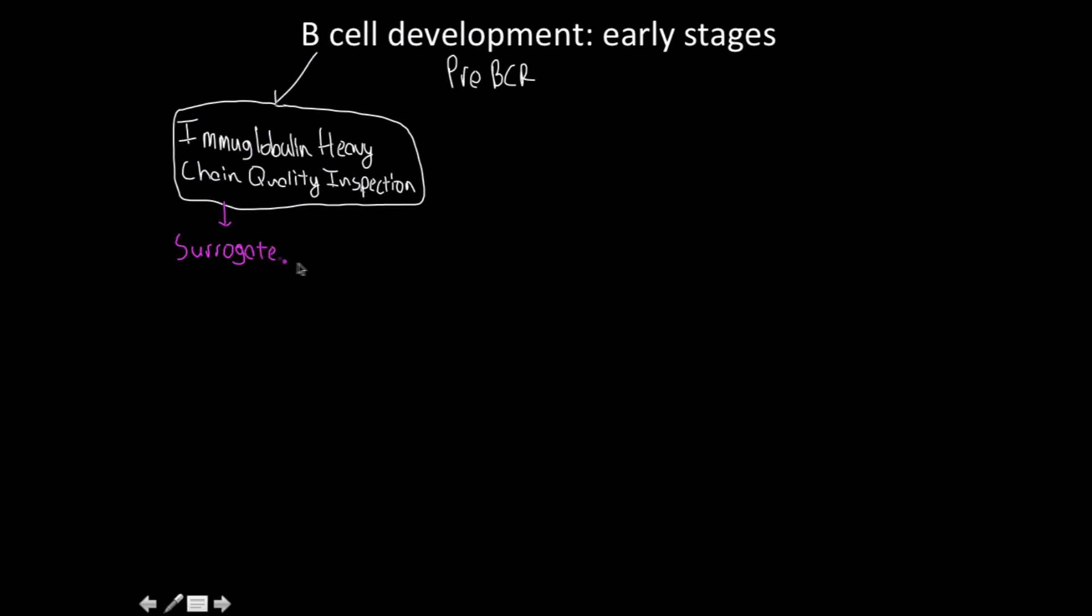We have to use an intermediate tester. A surrogate light chain, and it's what we said, that we're going to test if the heavy chain binds with the light.